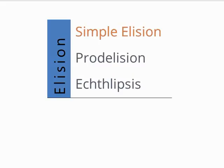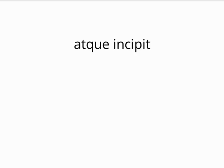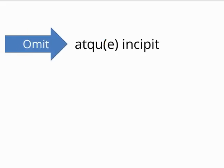The first, simple elision, is when the final vowel sound of a word is suppressed when the next word begins with a vowel. In atque incipit, for example, elision would occur, and the final I in atque would be omitted. This would lead to a pronunciation like atquincipit.